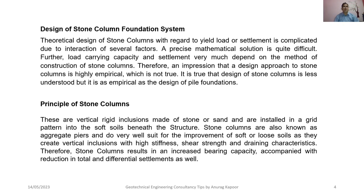Stone columns are vertical rigid inclusions made of stone or sand, installed in a grid pattern into soft soils beneath the structure. They are also known as aggregate piers and suit very well for improvement of soft or loose soils, as they create vertical inclusions with high stiffness, shear strength, and draining characteristics. Therefore, stone columns result in increased bearing capacity accompanied by reduction in total and differential settlements.